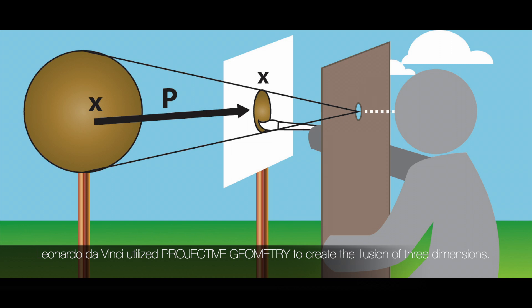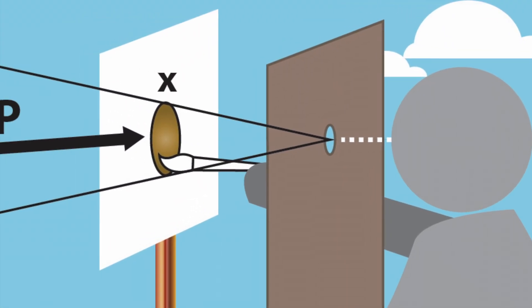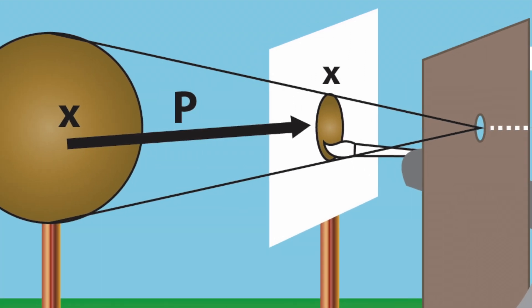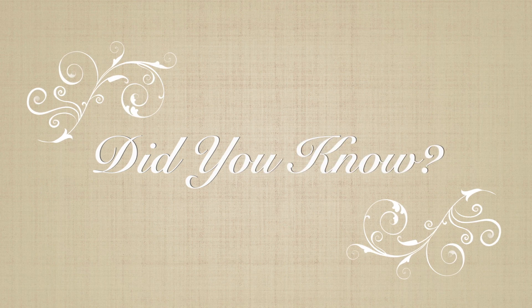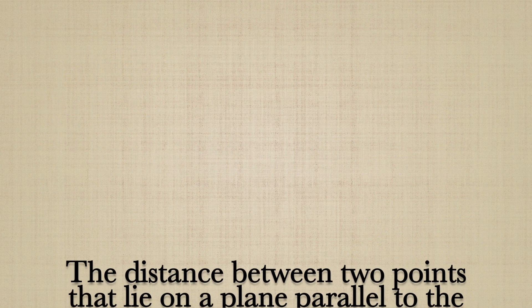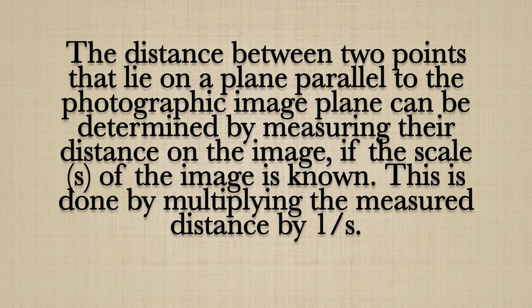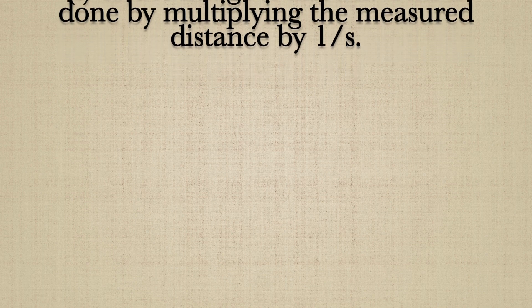How will we know where we are heading if we don't know where we are coming from? It's easy to forget that many of the techniques we use today are based on early works from hundreds of years ago. It began with Leonardo da Vinci, who worked on projective geometry, and continued with artists like Albrecht Dürer, who used the laws of perspective to create an instrument for producing true perspective drawings. Did you know? The distance between two points on a plane parallel to the photographic image plane can be determined by measuring their distance on the image, if the scale s of the image is known — by multiplying the measured distance by 1/s.